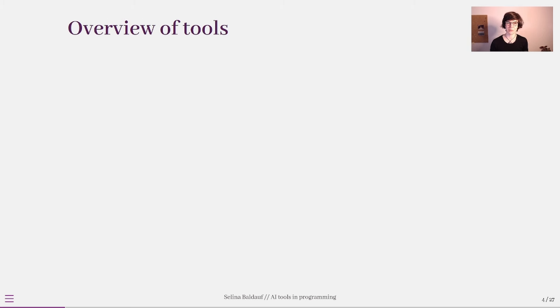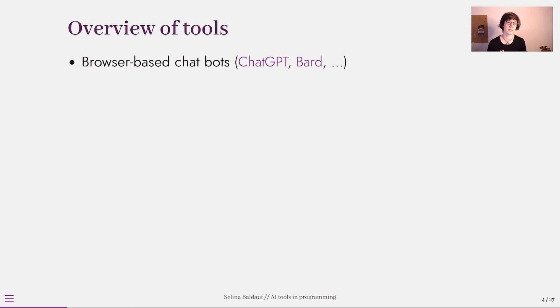There are so many different AI tools out there for programming, so in the beginning it was a bit overwhelming. When I started to prepare this lecture I tried to classify them to get an overview of the different possibilities. The first AI tools available are browser-based chatbots like ChatGPT or Bard, which are based on general purpose models but you can also ask them questions about programming.